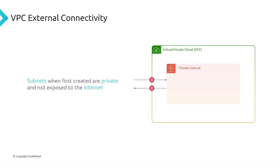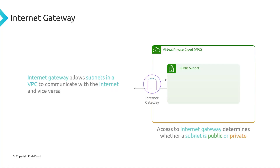When you create a subnet in AWS, that subnet by default is going to be a private subnet — it's not going to be exposed to the internet and you will not be able to access it from the internet. This is a security measure so you don't accidentally expose resources that don't need to be public. You have to explicitly change it to a public subnet to give it access to the internet. To make a private subnet public, we make use of an internet gateway. An internet gateway is assigned to a VPC and allows subnets in that VPC to communicate with the internet and vice versa. The internet gateway determines whether a subnet is public or private — it's assigned to the VPC, but giving a subnet access to it determines if that subnet is private or public.